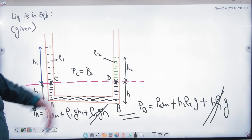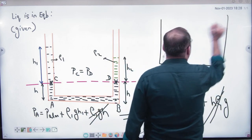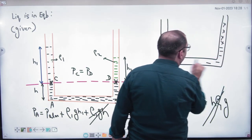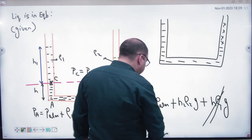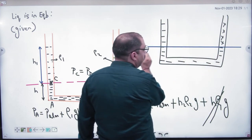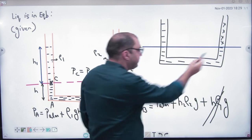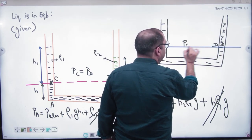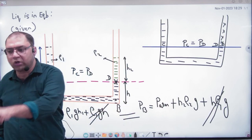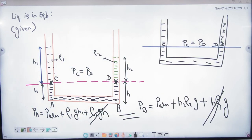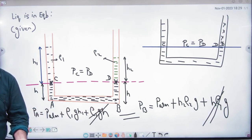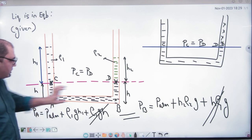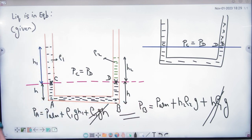So, here is the shortcut: if you are given a U-tube with two kinds of liquid, find the level where the two liquids meet and draw a horizontal reference line there. The points C and D on that line will have exactly equal pressure. This shortcut can be applied directly in objective problems. Equate the pressures at C and D — the contributions from each liquid column on both sides must balance.